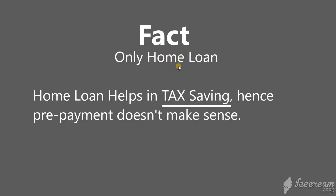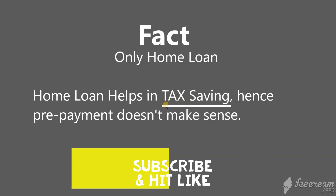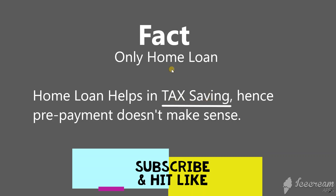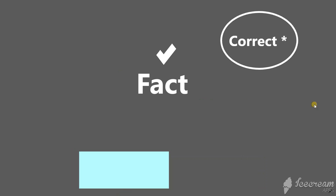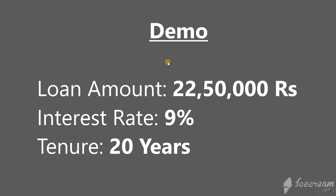Now let's understand one fact. This fact is applicable only to home loans. The fact is that people save tax on home loan interest — this understanding is correct, but there are a few conditions. For the demo, we are taking a loan amount of 22 lakhs 50,000, interest rate 9%, tenure 20 years.